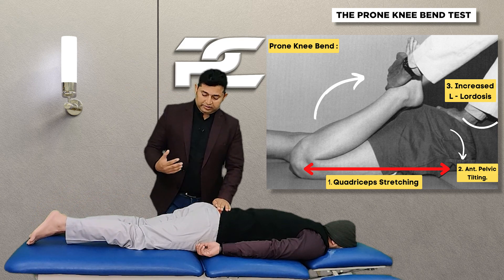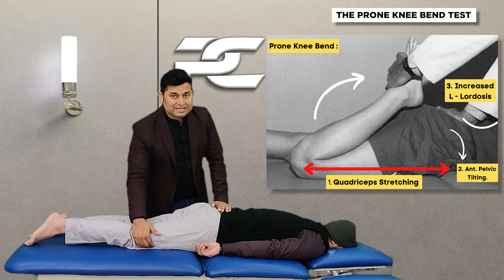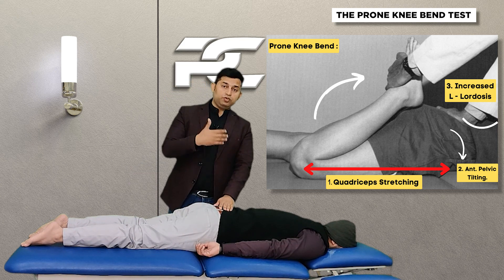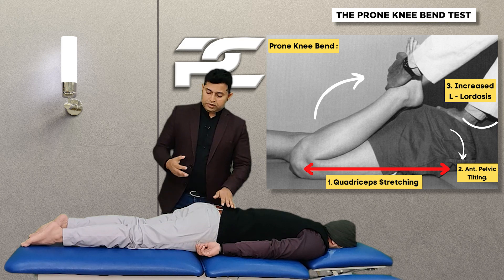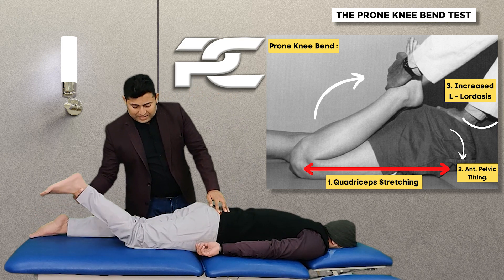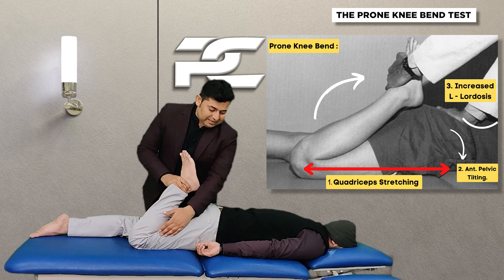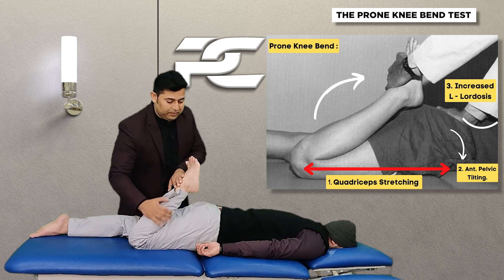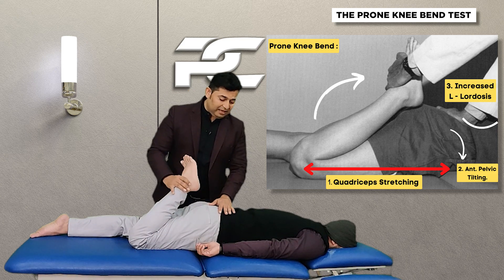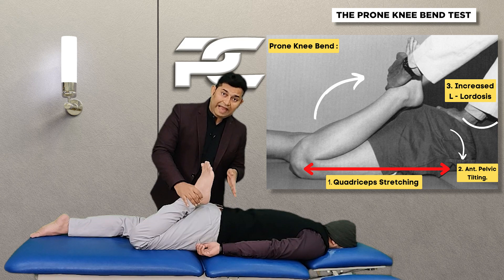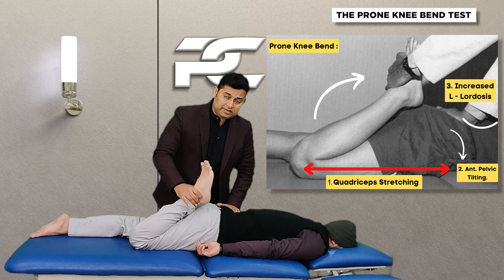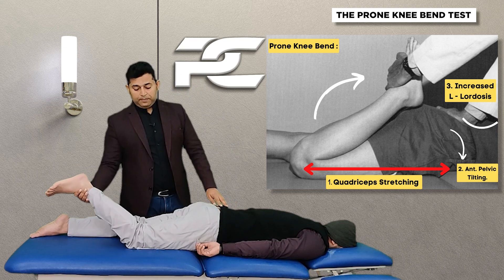The prone knee bend test is a classical example where the therapist moves or stretches the inert soft tissue — that is the quadriceps muscle — in order to add tension to the femoral nerve, which is the neural component. When the therapist bends the knee into flexion, it not only adds tension to the femoral nerve but also stretches the quadriceps muscle. Because of this, the pelvis goes into relative anterior tilting, and as the pelvis tilts anteriorly, we see an increase in lumbar lordosis.